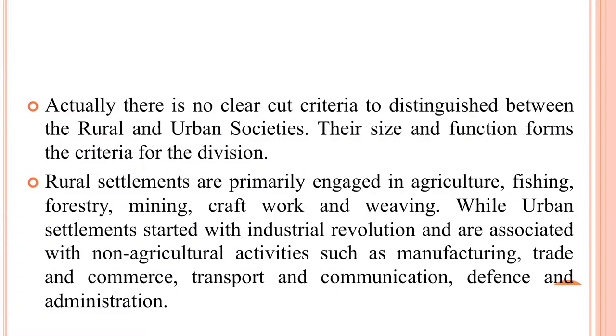With the discovery of the comforts of food sufficiency through agriculture, the convenience of mobility with the discovery of the wheel, and the security of living in a group, primitive humans began to feel the need for a settled life and made shelters for themselves. There was no clear-cut criteria to distinguish between the rural and urban societies. Their size and function form the criteria for this division. Rural settlements are primarily engaged in agriculture, fishing, forestry, mining, craft work and weaving.